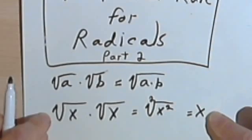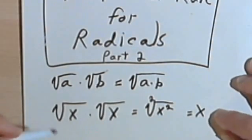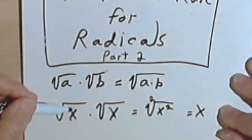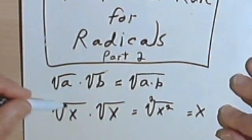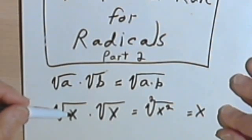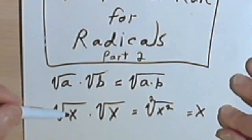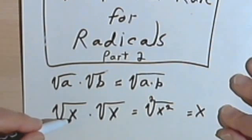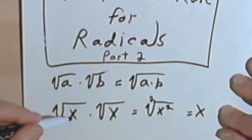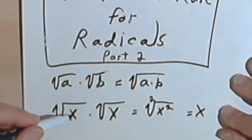Now there's a general rule here which you might want to remember: if you take any square root and you multiply it by itself — in other words, if you take any square root and you square it — you're going to end up with the radicand, the number that was originally under the radical sign.